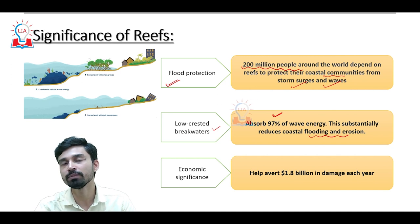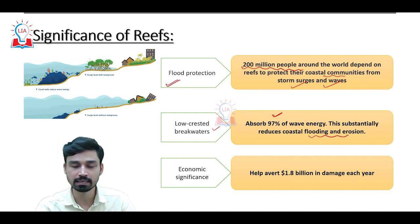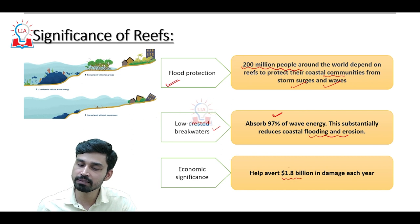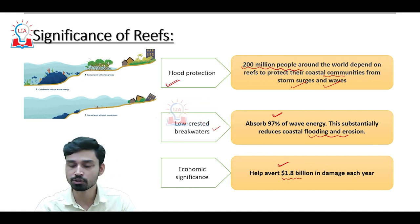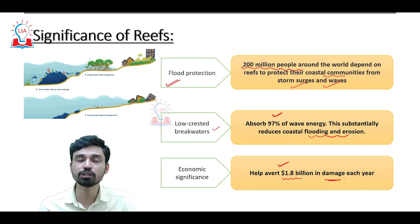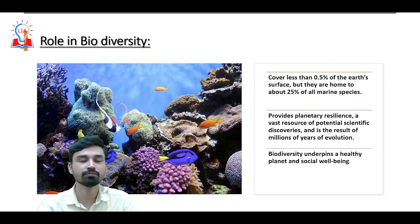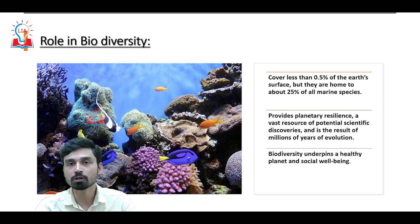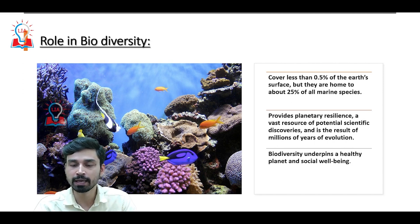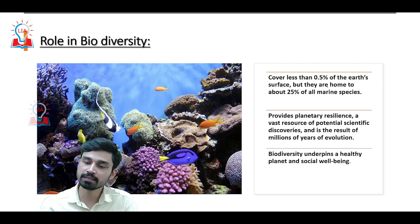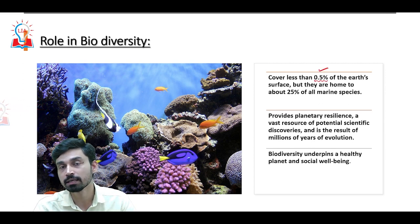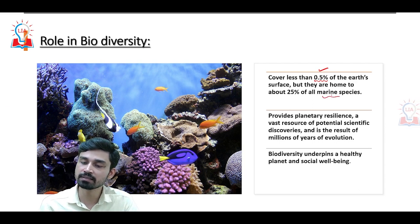From an economic point of view, coral reefs collectively help avert almost 1.8 billion dollars of damage each year from tropical storms and coastal flooding. Beyond coastal protection, coral reefs play a very important role in ensuring healthy biodiversity in oceanic areas. In terms of area, coral reefs cover less than 0.5 percent of the Earth's surface, but they are home to almost 25 percent of all marine species.